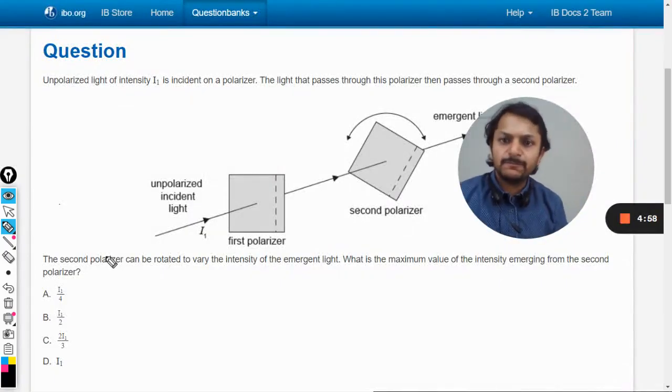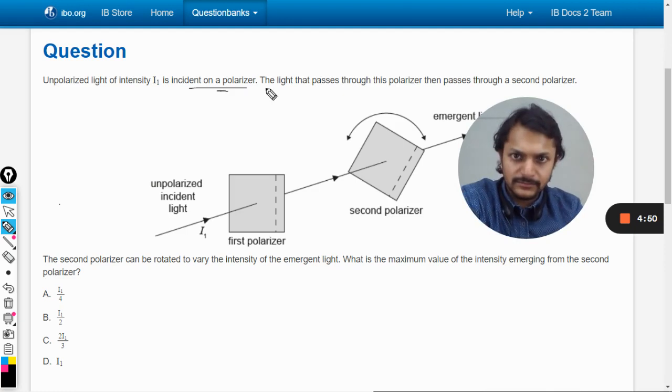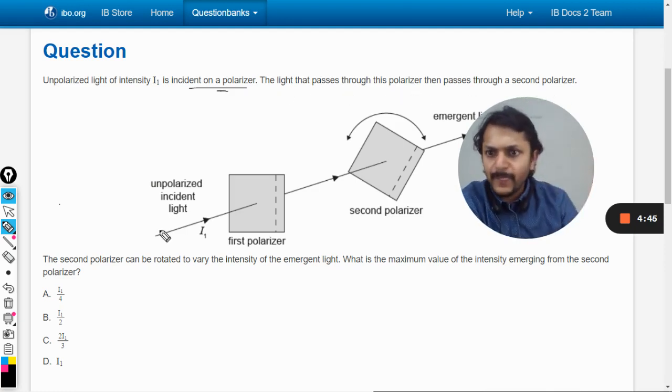Okay dear students, let us do this question. Unpolarized light of intensity I₁ is incident on a polarizer. The light that passes through this polarizer then passes through a second polarizer. The second polarizer is now rotated to vary the intensity of the emergent light.